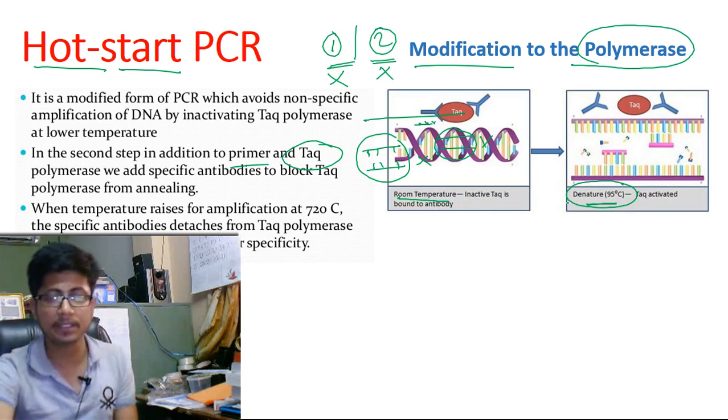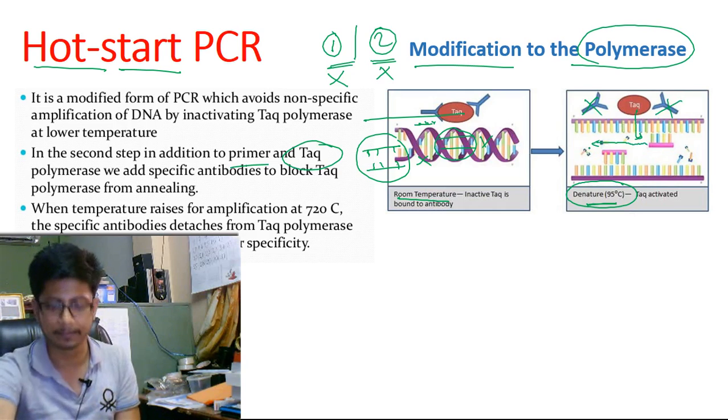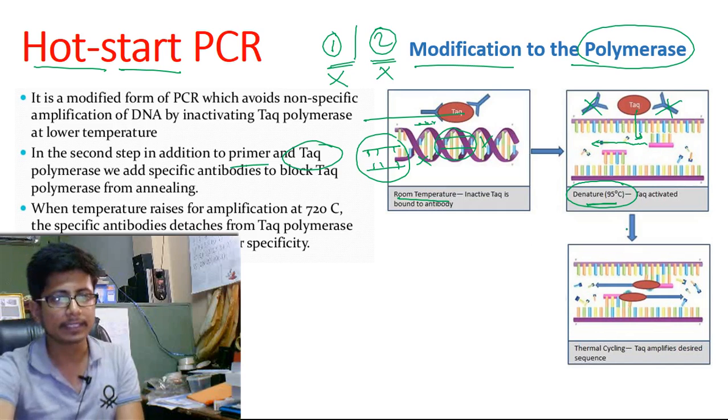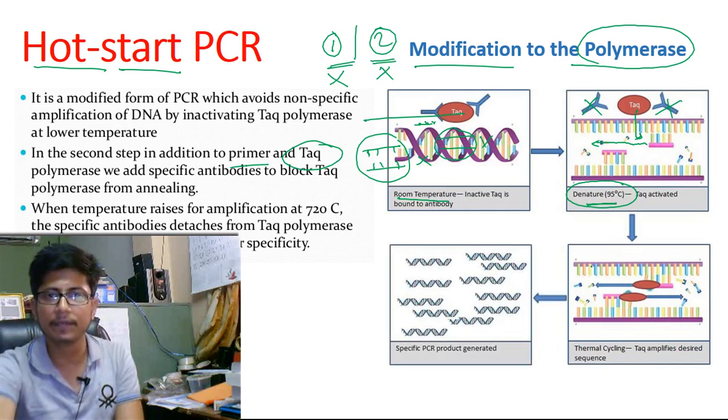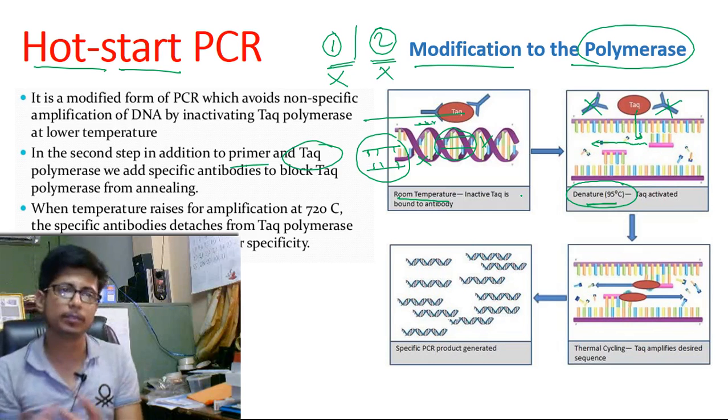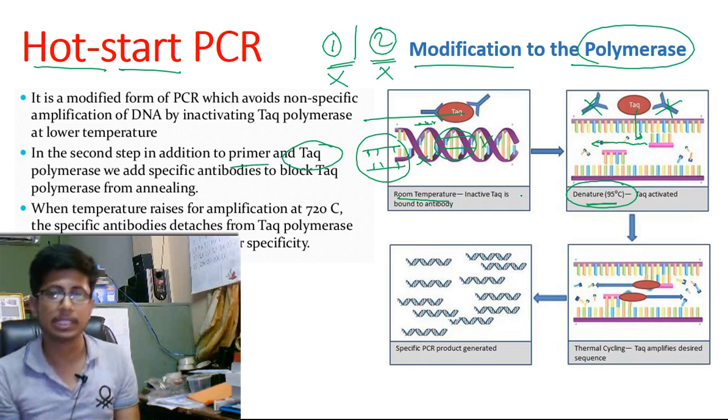The PCR process will only start if we add the temperature over 95 degrees Celsius. That will inactivate all those antibodies. The antibody will be degraded, so the Taq polymerase is now free and will elongate the primers properly. It can then make the amplified DNA fragment. That is the idea of Taq polymerase modification. We can use the modification using different antibodies as well as different enzymes to prevent that process from occurring.